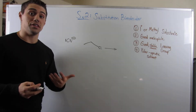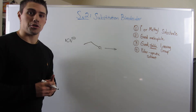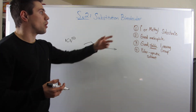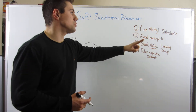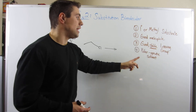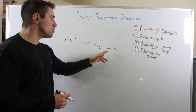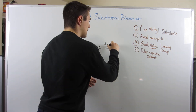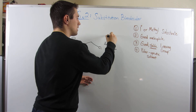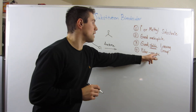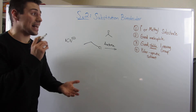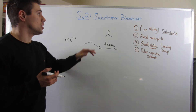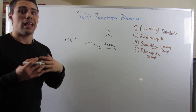Earlier I said things that tip you off to an SN2 reaction: primary or methyl substrate, a good nucleophile, a good leaving group, and I'm going to add one more thing. If you see a polar aprotic solvent — for example, acetone — that's a dead giveaway you'll most likely be doing an SN2 reaction.